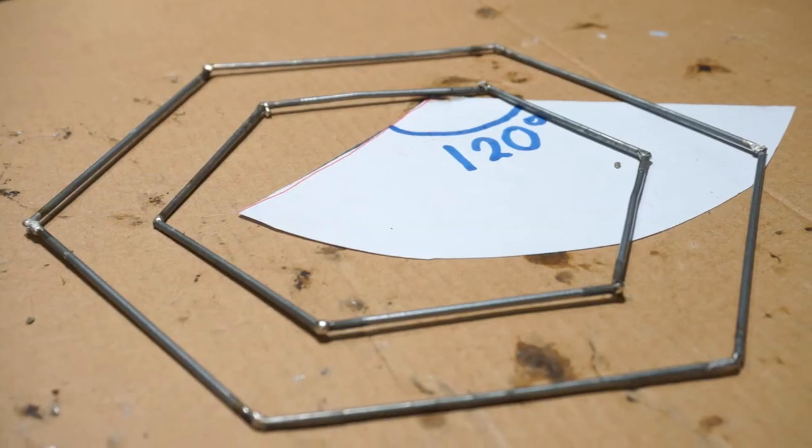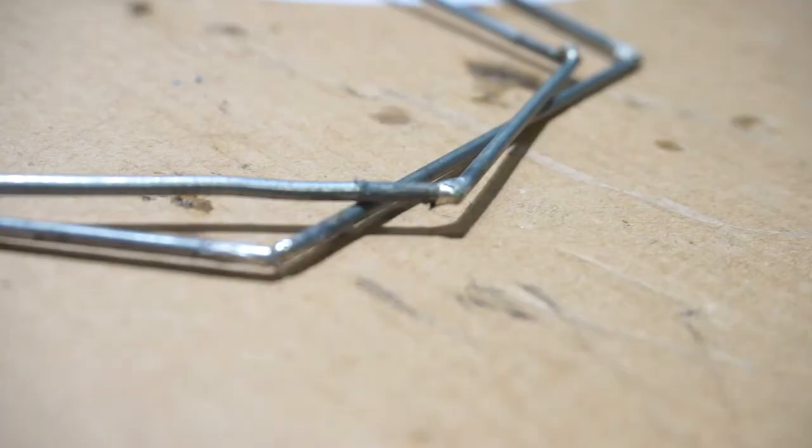I did the same with the 6cm pieces so that I now have 2 hexagonal wire pieces.